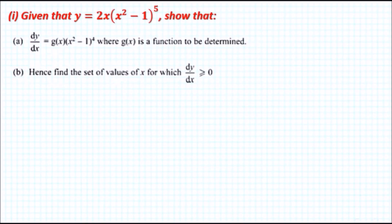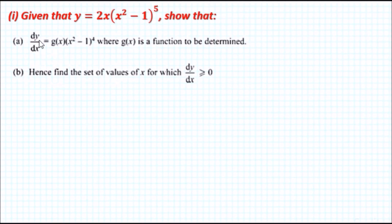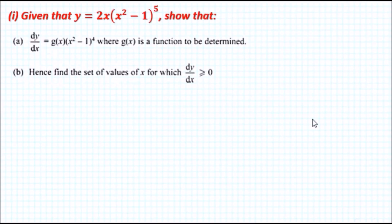Okay, here we are, number seven. We're given a function y equals 2x multiplied by (x² - 1) to the power of 5, and we need to show that the derivative is given by this function. Then, hence, we need to find the set of values of x for which the derivative from part a is greater than or equal to zero. So looking at part a first.